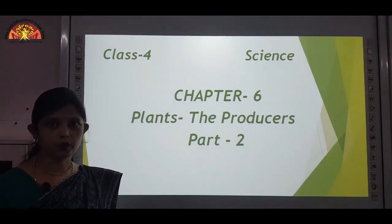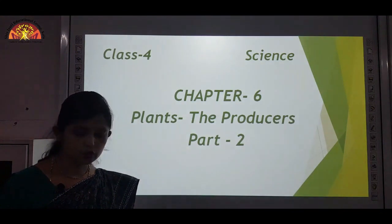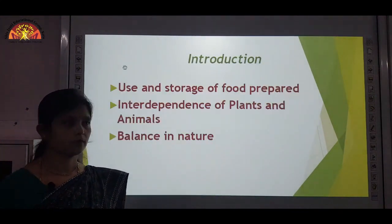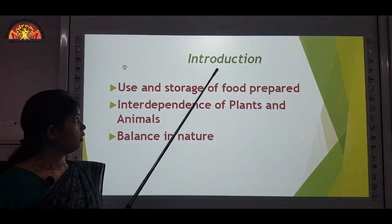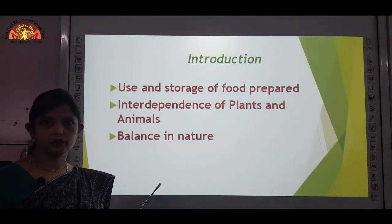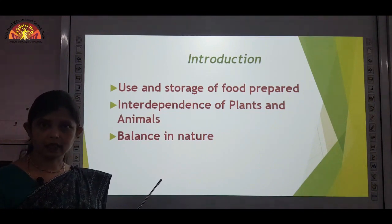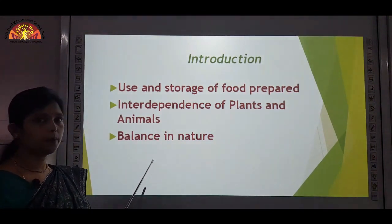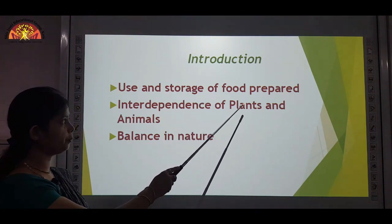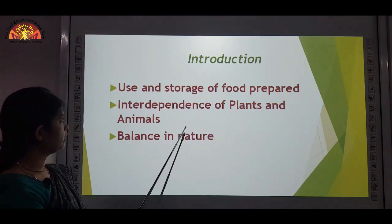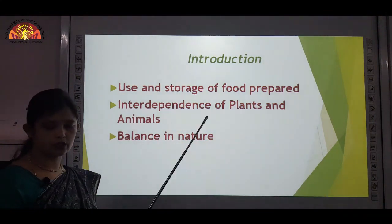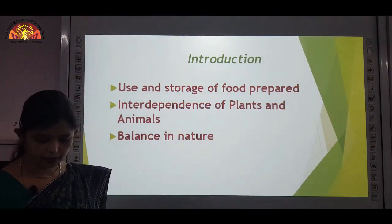All of you, open your books, Chapter 6, page number 50. Children, as we have already discussed the first part of this chapter, this is the second part. In this part, you will learn about use and storage of food prepared, interdependence of plants and animals, and balance in nature. So let us come to the topic.